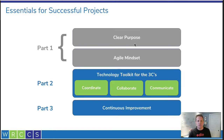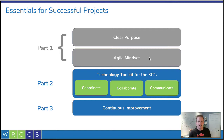Now we've spent a little time establishing a clear purpose, our why, for the project. We also established an agile mindset — a way of dynamically moving, flowing with the punches, and getting through some of the changing requirements across the project. Now we need to establish some clear hows, like how we're going to manage all this stuff. This section is all about the technology toolkit for what I call the three Cs.